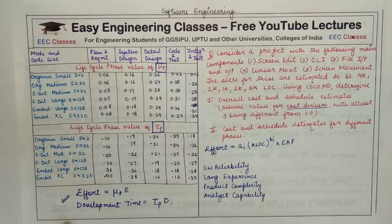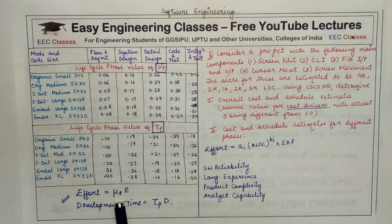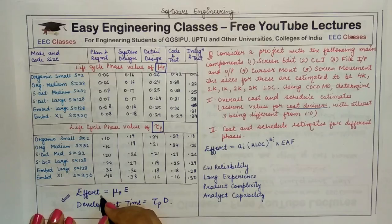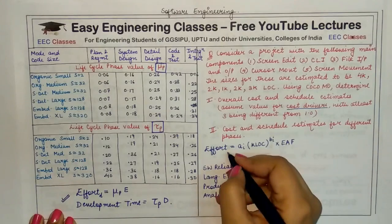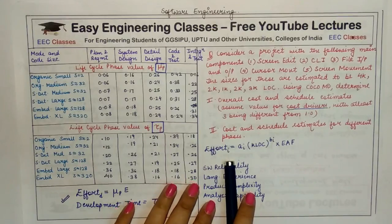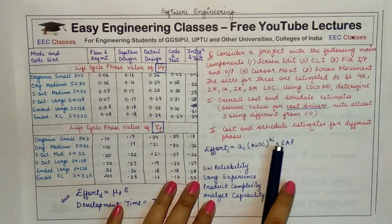Since the question mentions cost drivers, this is a detailed model COCOMO question. In the detailed model, when you calculate effort, you multiply the phase-sensitive effort multiplier mu_p with the basic effort E. This E is calculated just like in the intermediate model — using the formula: E = A × (KLOC)^B × Effort Adjustment Factor.